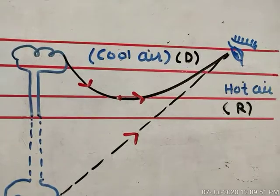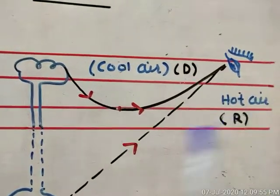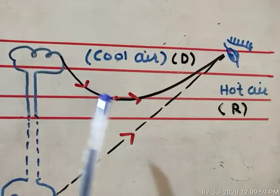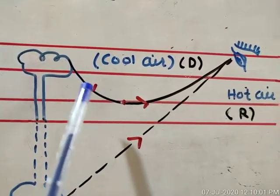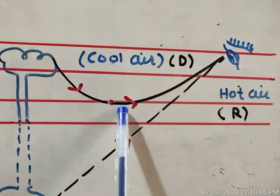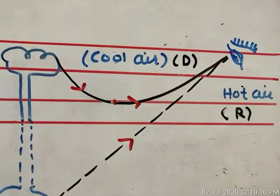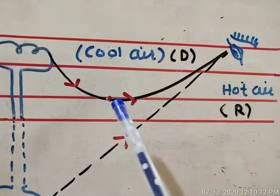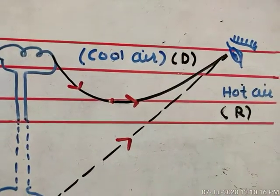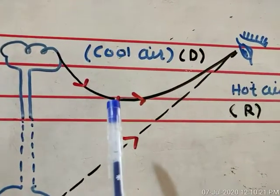Now if there is an observer here, the light rays travel from the denser medium towards the rarer medium. At a particular point, the angle of incidence becomes more than the critical angle. At that point, this light ray returns back to the same medium — that is, this light ray undergoes total internal reflection.